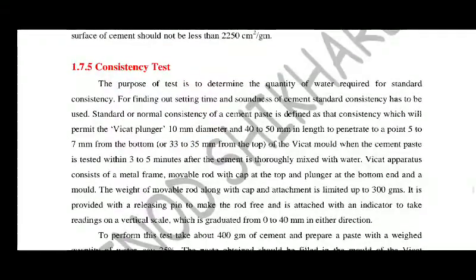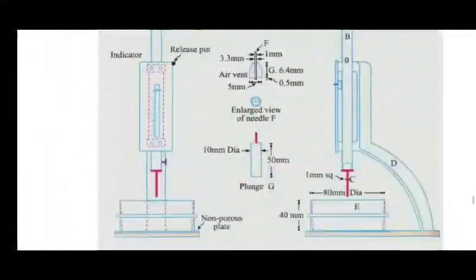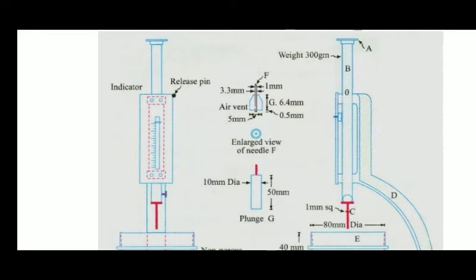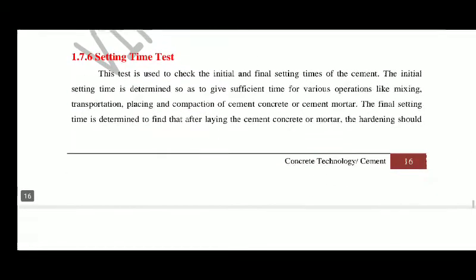This is the figure of the Vicat apparatus. This apparatus is used for consistency test, strength test, and setting time of cement — that is initial setting time and final setting time. The initial setting time should not be less than 30 minutes and the final setting time should not be more than 600 minutes for Ordinary Portland Cement.